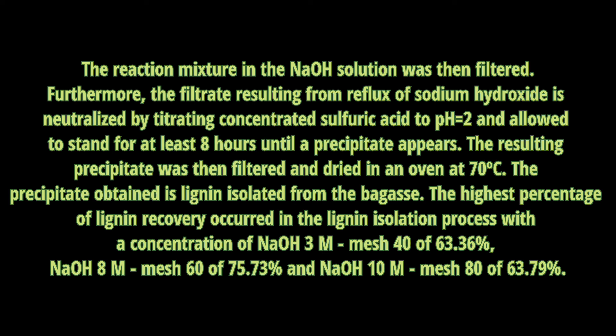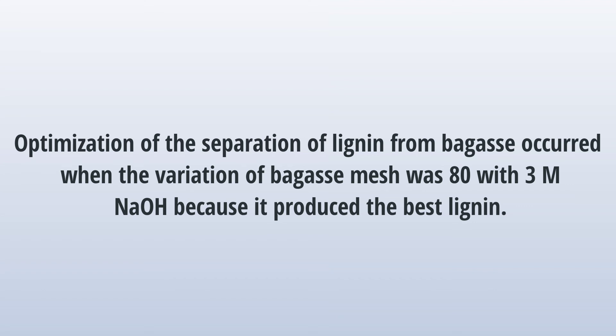The highest percentage of lignin recovery occurs in the lignin isolation process with sodium hydroxide 3M at mesh 40, yielding 63.36 percent; sodium hydroxide 8M at mesh 60, yielding 75.73 percent; and sodium hydroxide 10M at mesh 80, yielding 63.79 percent. Optimization of the separation of lignin from bagasse occurred when the mesh variation was 80 with 3M sodium hydroxide, because it produces the highest lignin yield.